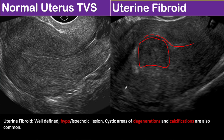Among the three variants, submucosal fibroid is the least common. However, submucosal fibroid is the most symptomatic and patients usually present with abnormal vaginal bleeding, pain, and sometimes with infertility.